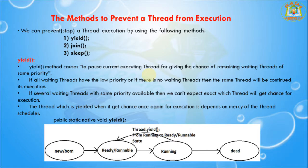If you see this picture, when a thread is created that is the born state. Whenever we are starting the thread it comes into the ready or runnable state. After that, based on thread scheduling, it goes to the running state. Whenever we are calling thread.yield, it changes from running to ready or runnable state.